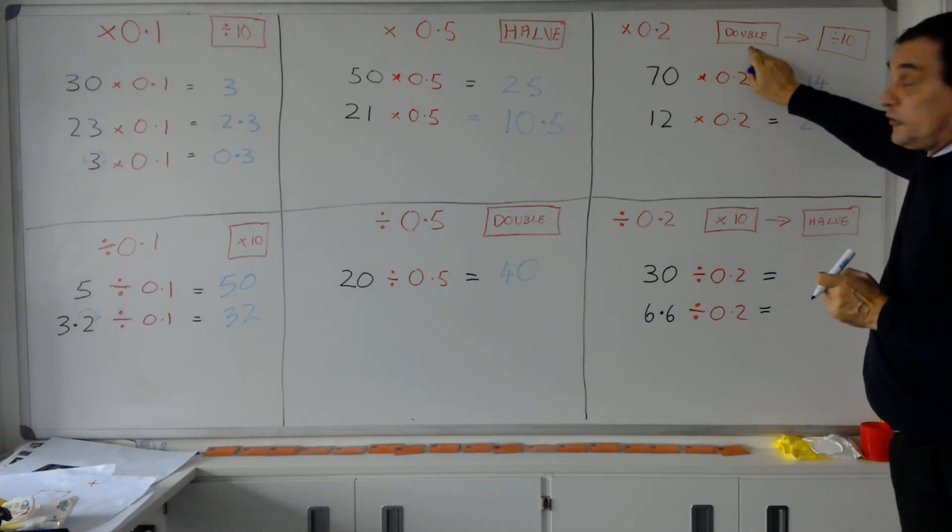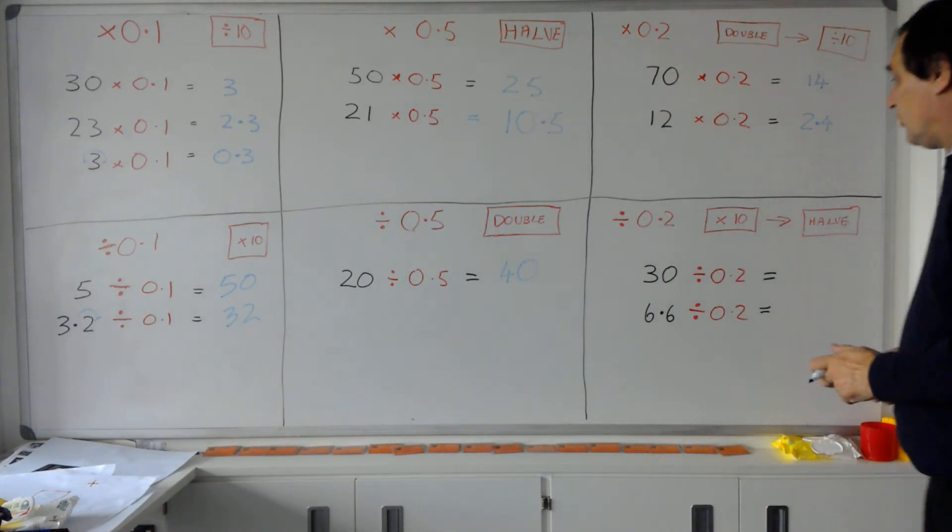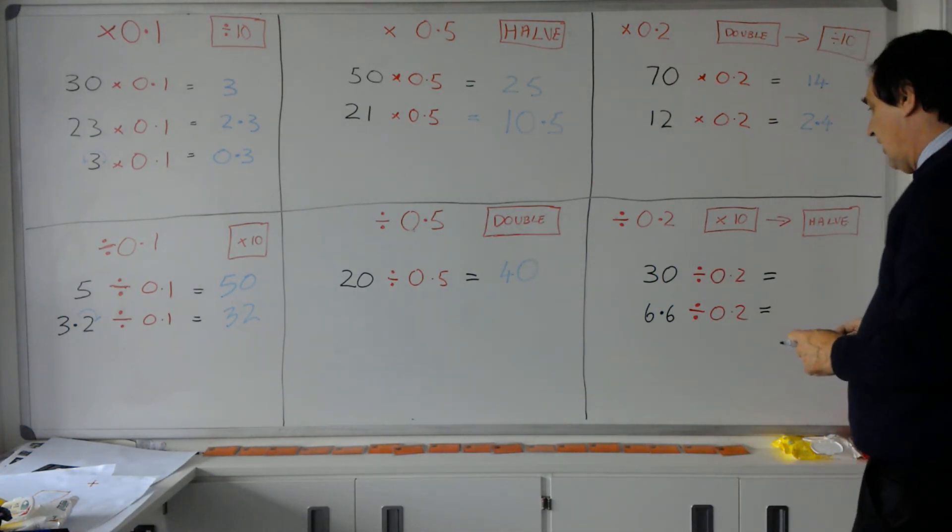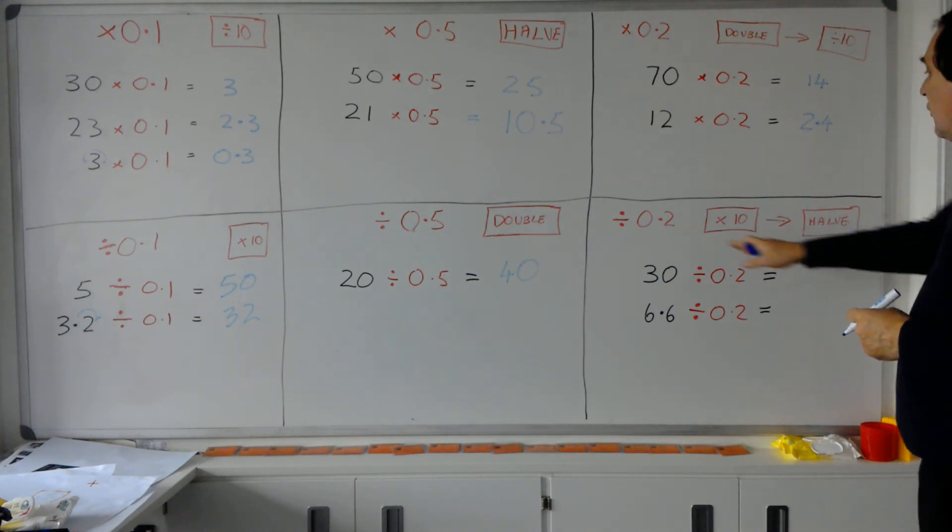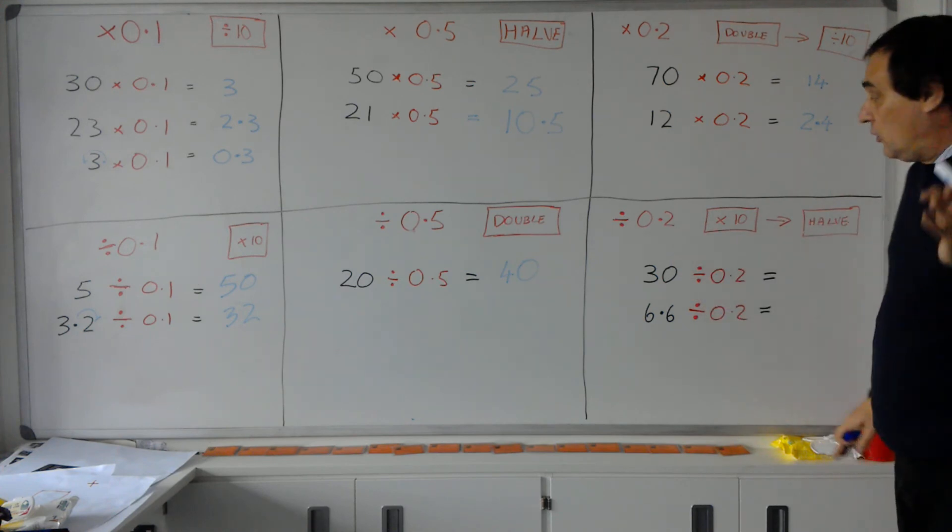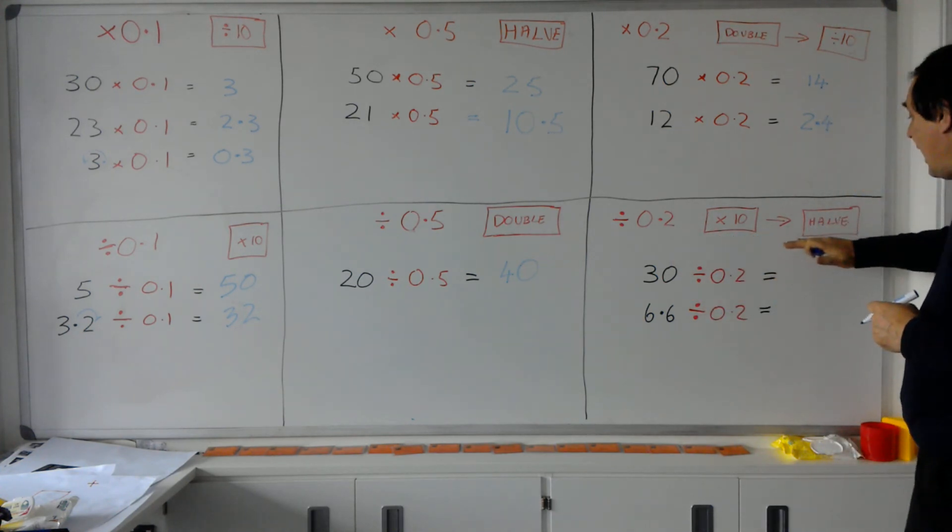In the same way, dividing by 0.2 actually means multiply by 5, but let's make sure that we've got the stages to do it. So if we've divided by 0.2, let's do two stages: we're going to multiply a number by 10 first, and then we're going to half that answer.